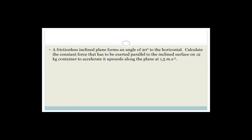A frictionless inclined plane forms an angle of 20 degrees to the horizontal. Calculate the constant force that must be exerted parallel to the inclined surface on a 12 kilogram container so that it accelerates upwards along the plane at 1.5 meters per second squared. Note: it says frictionless, so there is no friction — the force mentioned is the applied force.